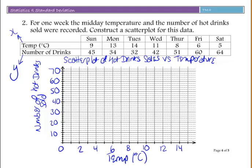Here you can see I've labeled my axes, put in a title, and added my scale. Now I'm going to plot my points. You can see my scatterplot here, and it kind of makes sense—it shows that the lower the temperature, the more hot drinks were sold.